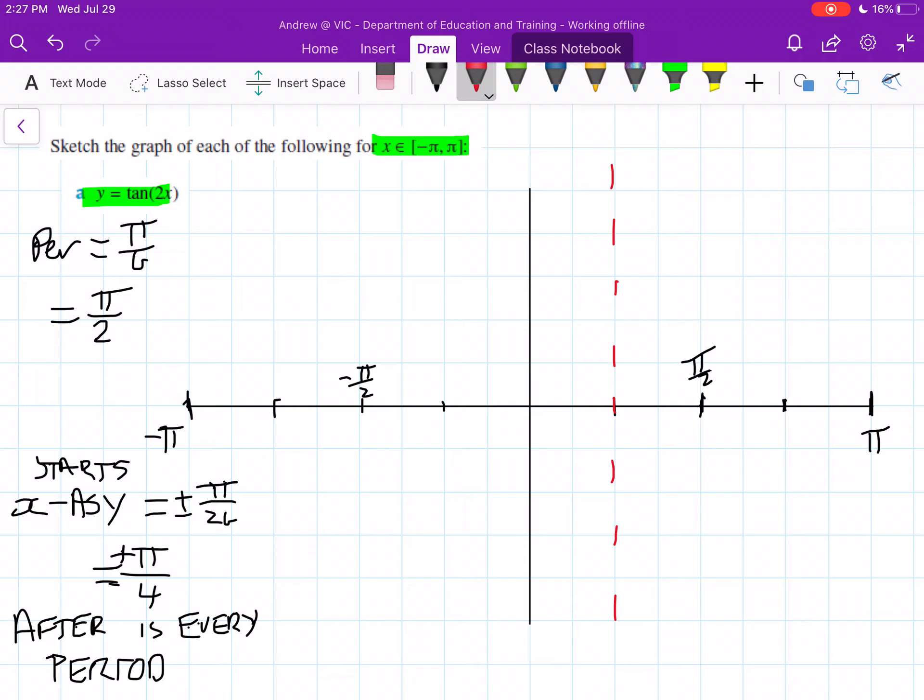So there's one of them, another one's here. Just make sure we label these as well. This one is π/4, this one's negative π/4.